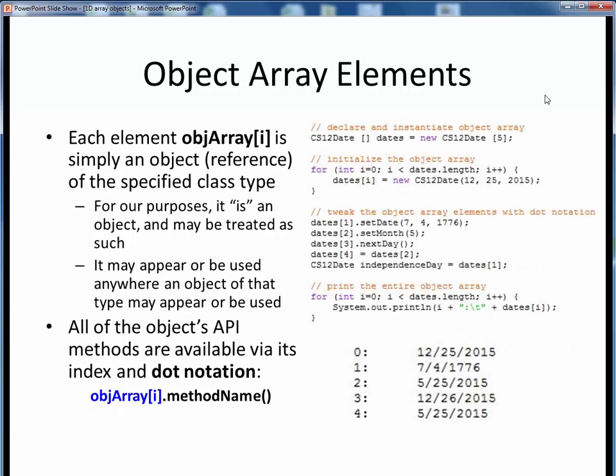The key thing to understand about an object array is that any indexed element of the array is simply an object of the specified class type. Formally speaking, it's really an object reference, but for all practical purposes it is an object, and we can treat it as such.